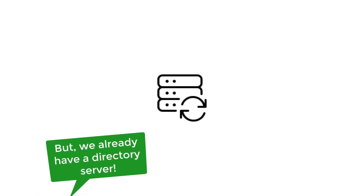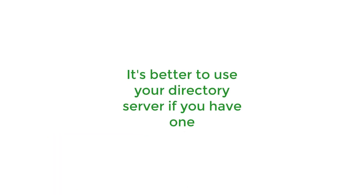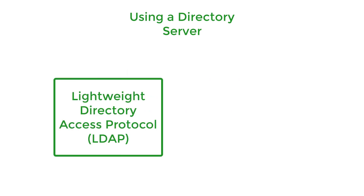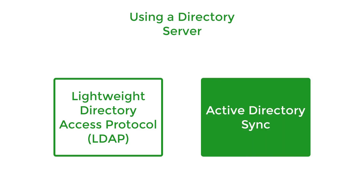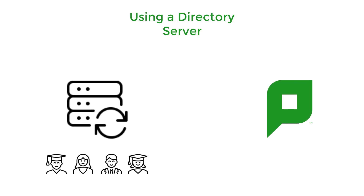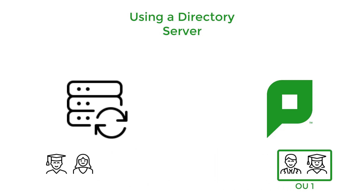Of course, if your organization already has a directory server, it makes sense to have PaperCut use that as its source for the groups. Depending on how your directories are configured, you'll either use Lightweight Directory Access Protocol, or LDAP, or the built-in Active Directory module in PaperCut. These modules allow your organization to sync in the existing security groups or organizational units from your directory server.